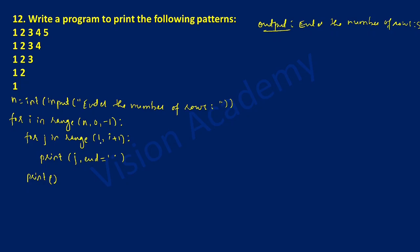For the first iteration, j starts at 1 and i is 5, so the range is 1 to 6. The range function has three arguments: start, stop, and step. Here start is 1, stop is i plus 1 which is 6, and step increments by 1 by default. Since 6 is exclusive, it prints 1, 2, 3, 4, 5.